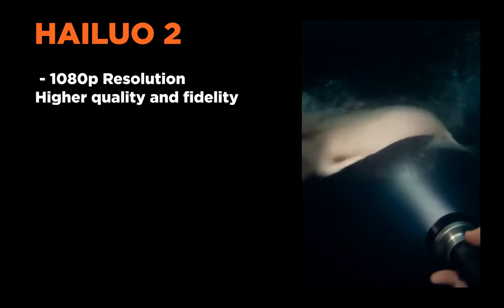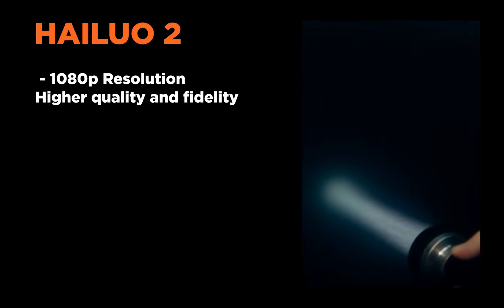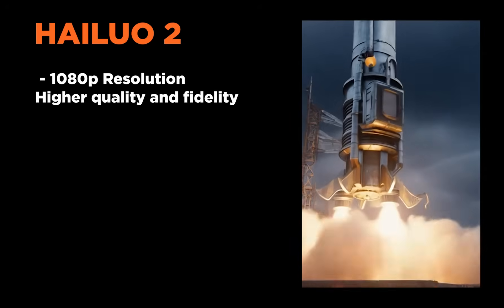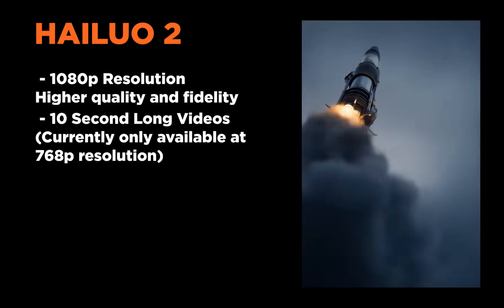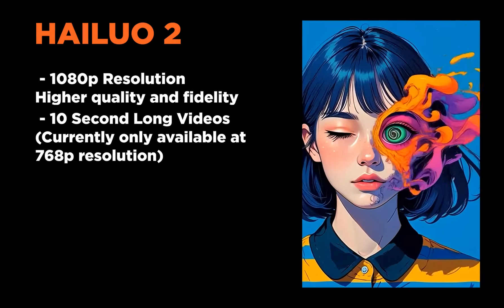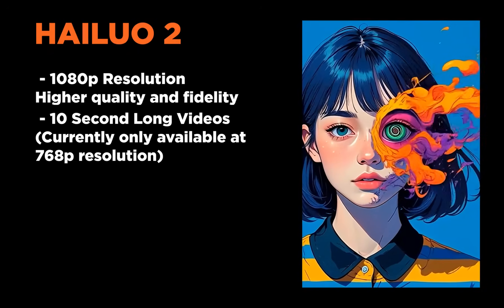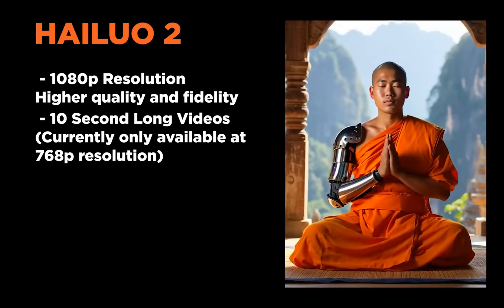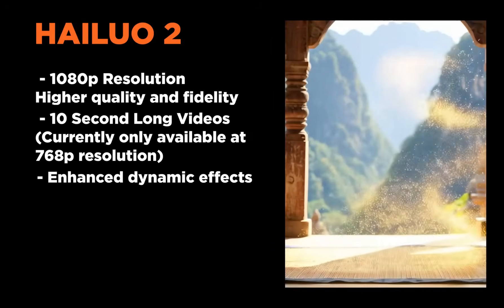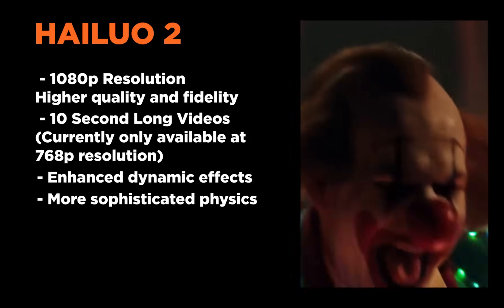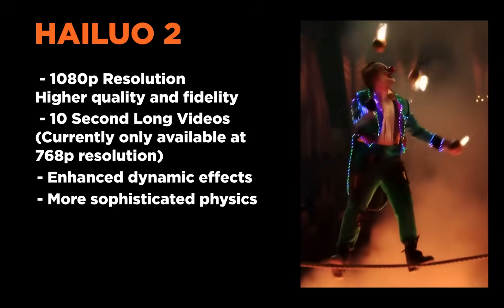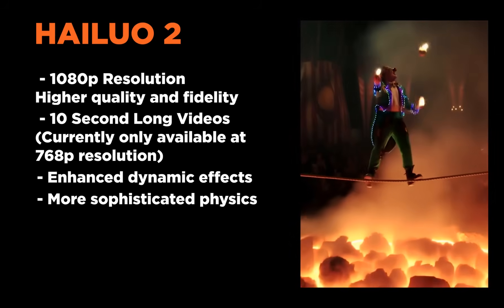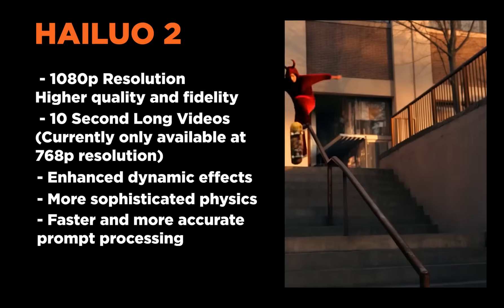With Hilo 2, we can finally generate videos at 1080p resolution, which means you're going to get outputs with much higher quality and fidelity. You can also generate videos that are 10 seconds long, but at the moment you can only do that at 768p resolution. Hilo says the new model excels at generating enhanced dynamic effects, more sophisticated physics — I've seen examples with acrobatics in a circus and it looks quite insane — and also faster and more accurate prompt processing.